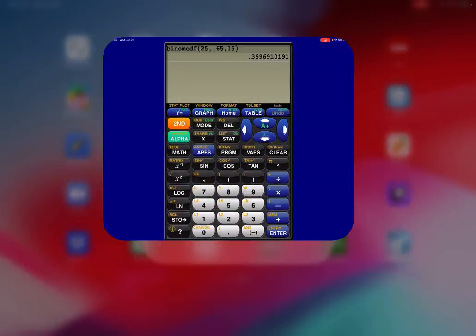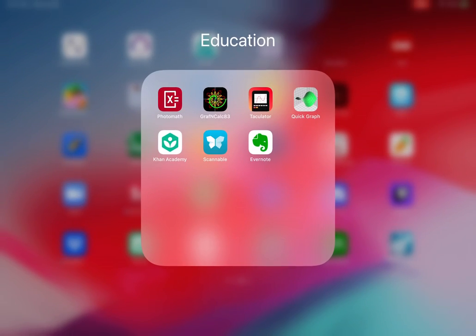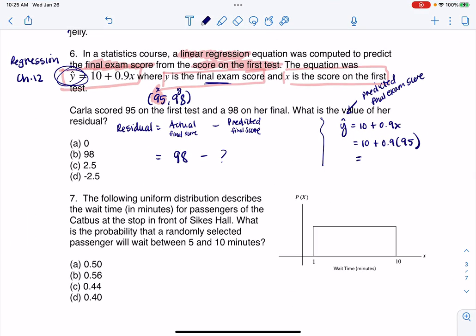So let me head over and clear this out. So we're going to have 10 plus 0.9 times her first exam score of 95. So it looks like we predicted her final exam was going to be 95.5, which is fine. So we had a little bit of an underestimate. So let me go ahead and write 95.5. And when I subtract those two numbers, I'm going to wind up with positive 2.5. And there is my answer.